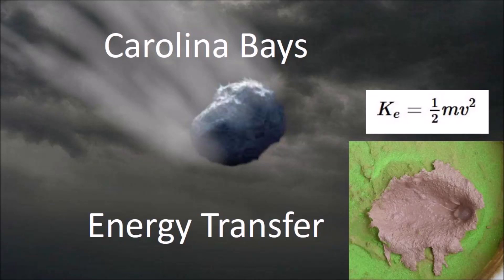The impacts of glacier ice boulders that made the Carolina Bays had kinetic energy equivalent to the explosion of many megatons of TNT. This presentation uses equations of linear motion to calculate the energy transfer during the creation of the penetration funnels.